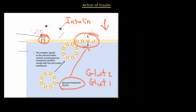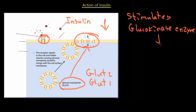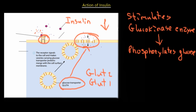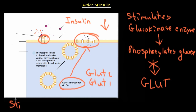The glucose represented by all those dots can be taken up inside the cell, lowering the concentration of glucose in the blood. Another thing insulin does is stimulate the glucokinase enzyme. Glucokinase phosphorylates the glucose that has been taken up by the cells. When glucose is phosphorylated, it cannot pass back through the GLUT transporters — due to its change in conformation, the glucose is essentially trapped inside the cell and cannot diffuse back into the blood.